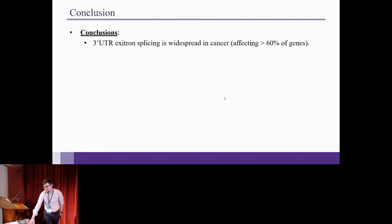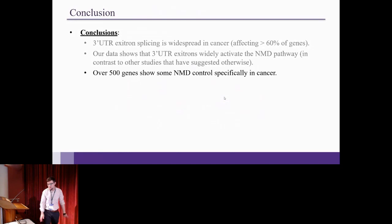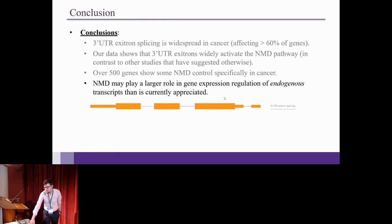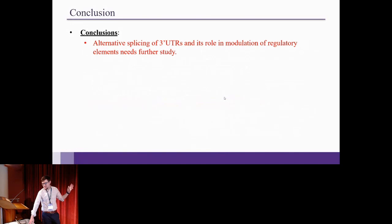Okay. So in conclusion, 3' UTR exotron splicing is widespread in cancer. It affects more than 60% of genes. Our data shows that 3' UTR exotrons widely activate NMD pathway. This is in contrast to some other studies that have kind of suggested otherwise. Over 500 genes show more NMD control specifically in cancer. NMD may play a larger role in gene expression regulation of endogenous transcripts, and it's currently appreciated. So not transcripts that have an induced premature stop codon. And then around 50% of detected exotrons are associated with NMD, but what functional role do 3' UTR exotrons play for the other 50%? And that's where RNA binding proteins, microRNA evasion, and other stuff come in. So lastly, alternative splicing of 3' UTRs and its role in modulation of regulatory elements needs much further study.